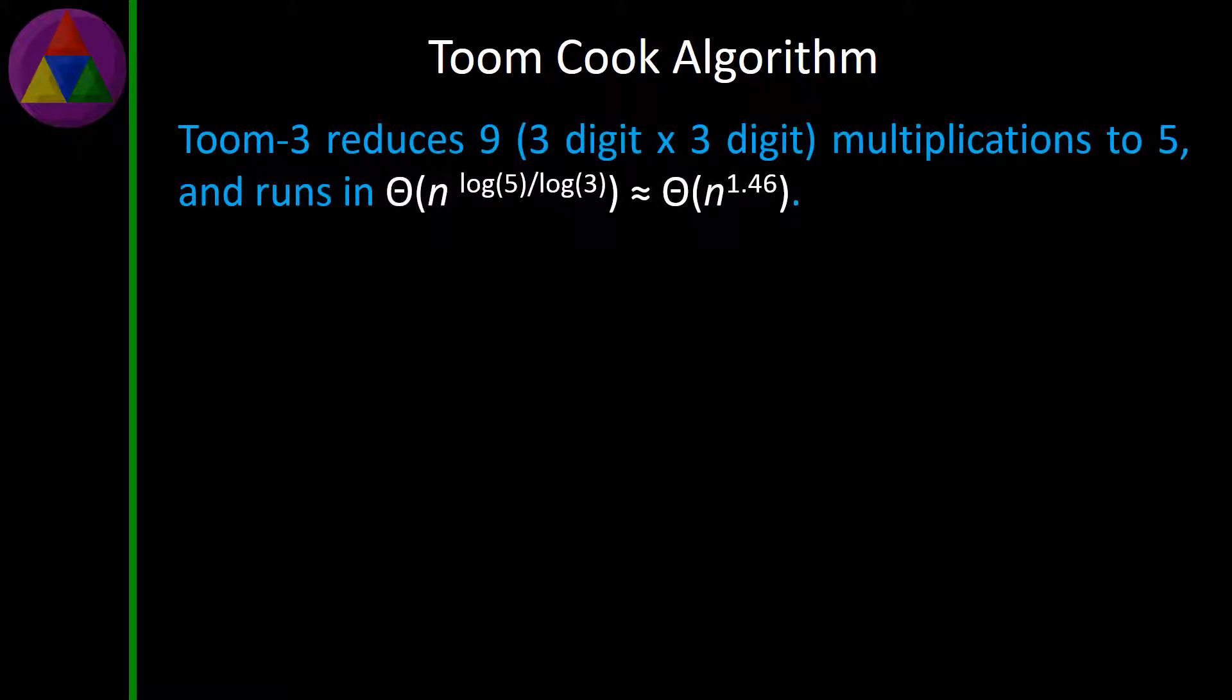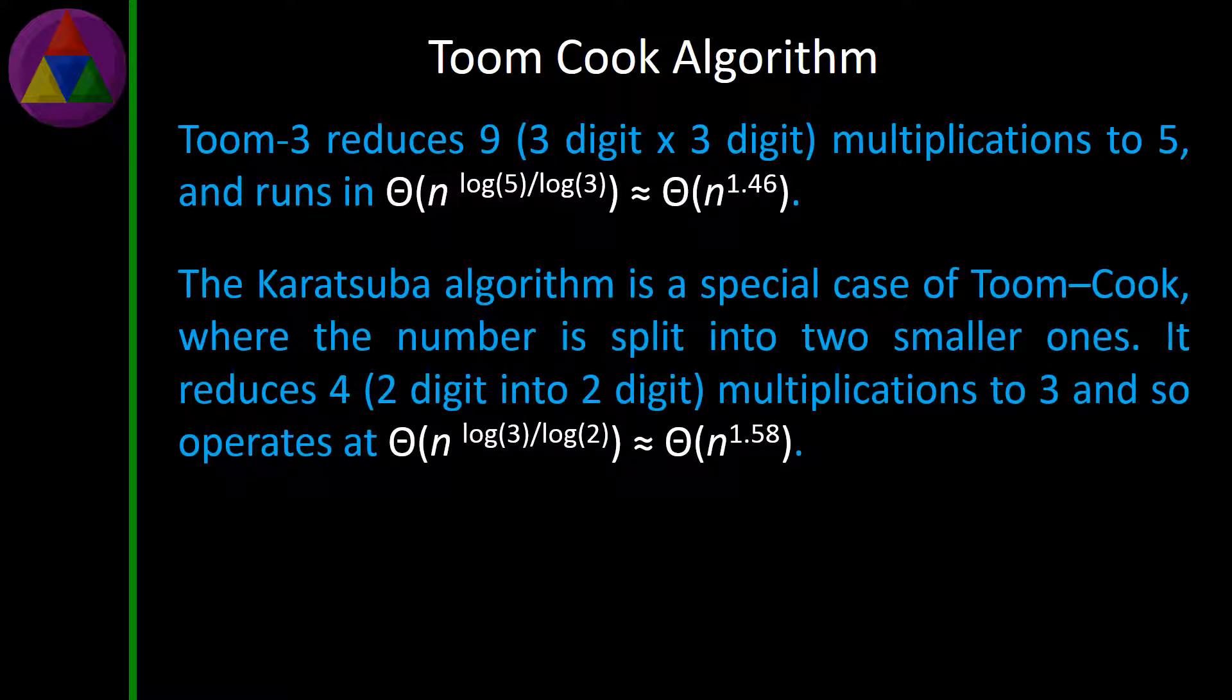Toom-3 reduces 9 (3 digit × 3 digit) multiplications to 5, and runs in Θ(n^(log5/log3)) ≈ Θ(n^1.45).